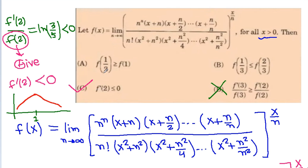So f(1/2) < f(1) and f is increasing on (0,1), decreasing on (1,∞). The correct options are B and C.